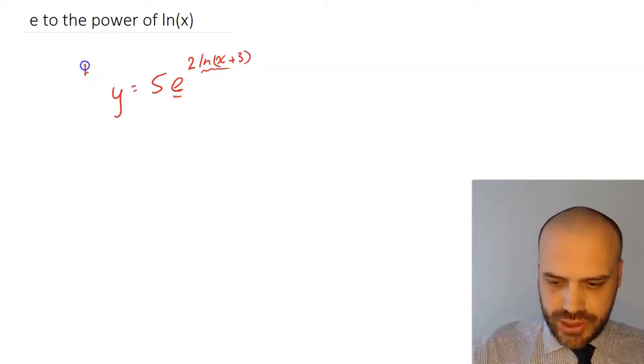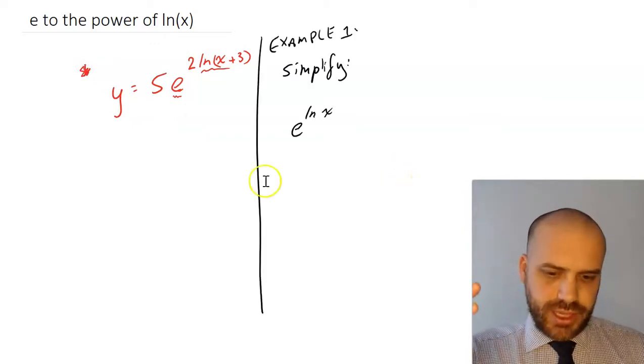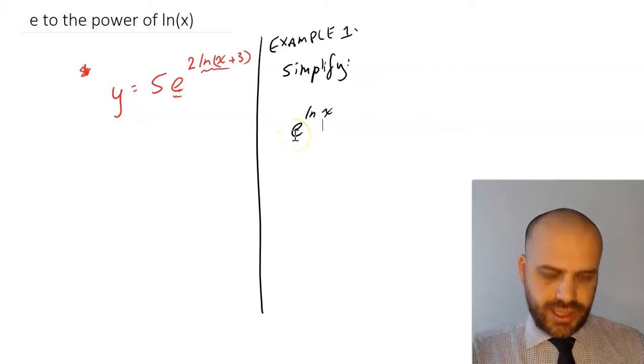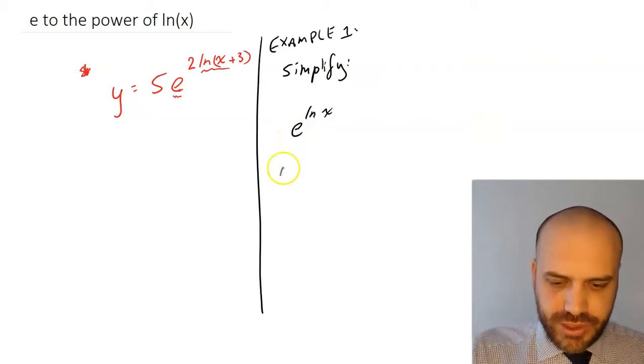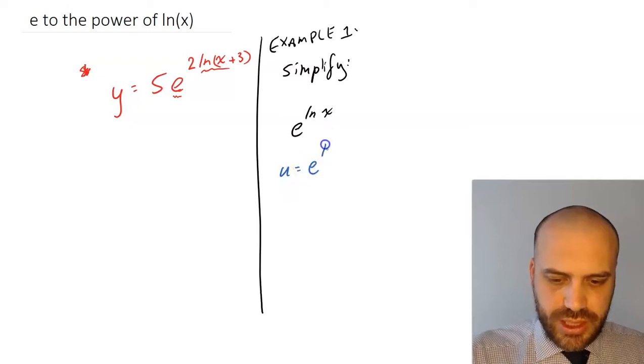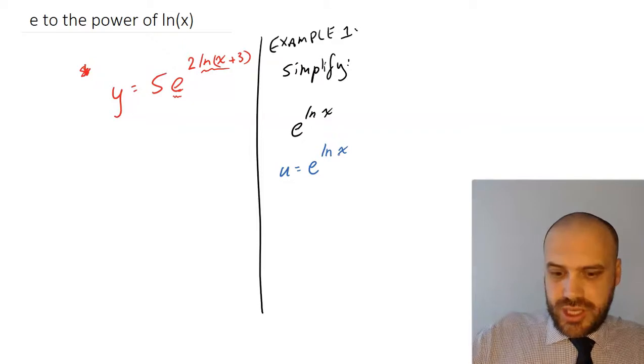Well, before we look at this specific example, let's make it far simpler. Here's our way simpler example. We're just going to simplify e to the ln x. Simplify this. First, I'm going to write it as a bit of an equation. So I'm going to say u equals e to the ln x. And then I'm just trying to figure out what u is equal to.